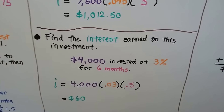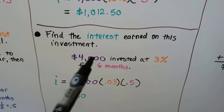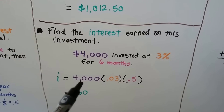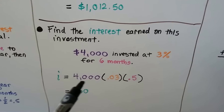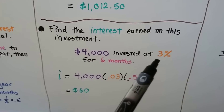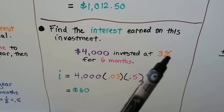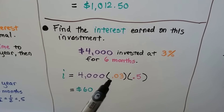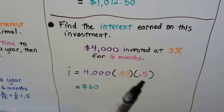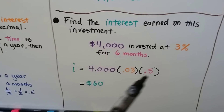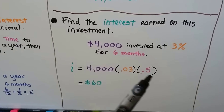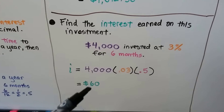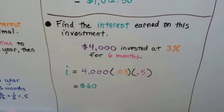Find the interest earned on this investment: $4,000 invested at 3% interest for six months. I equals 4,000 times 0.03 — we move the decimal two hops to the left, add a zero as a placeholder, remove the percentage sign, giving 0.03. Six months is 0.5, half of a year. We multiply all of these together and get $60. So this person earned $60 on their investment over six months.